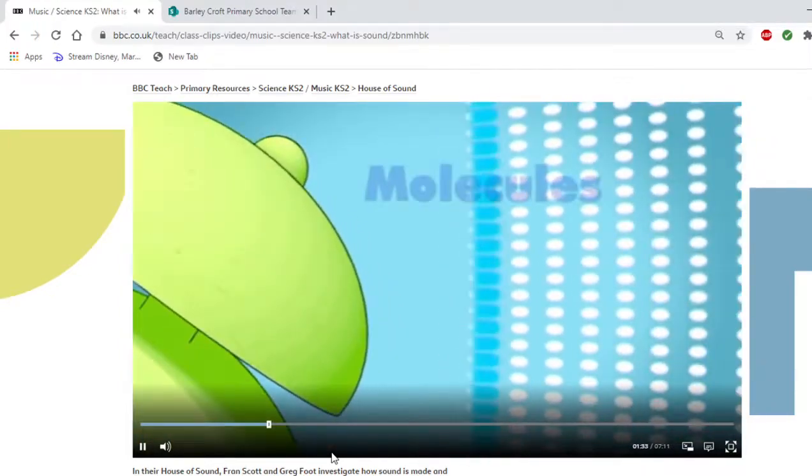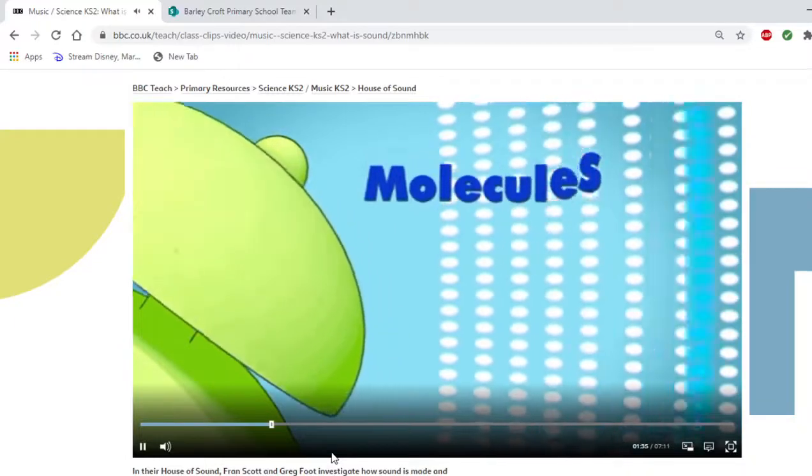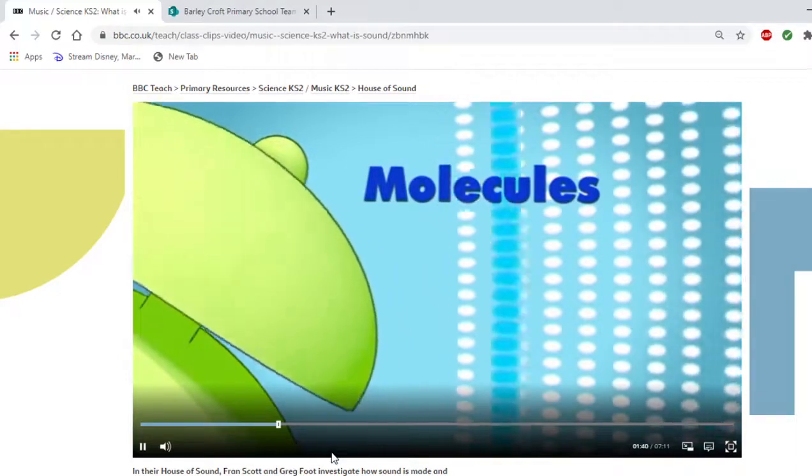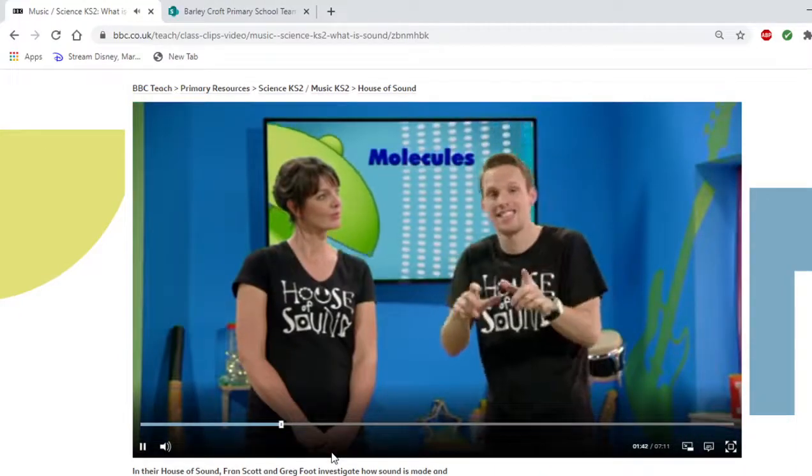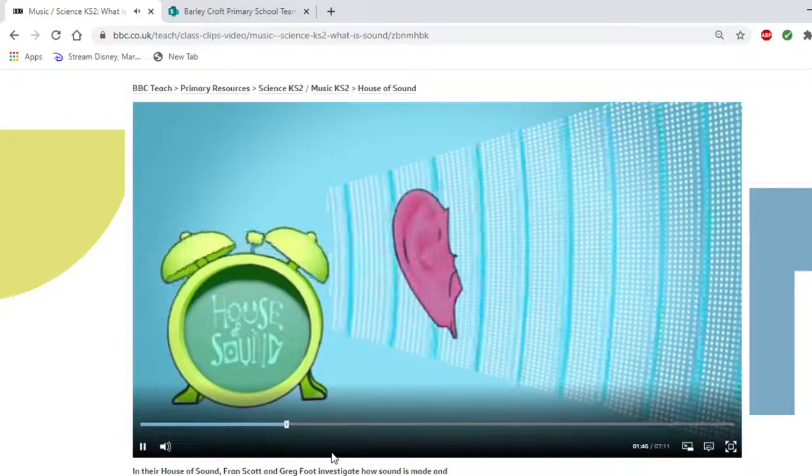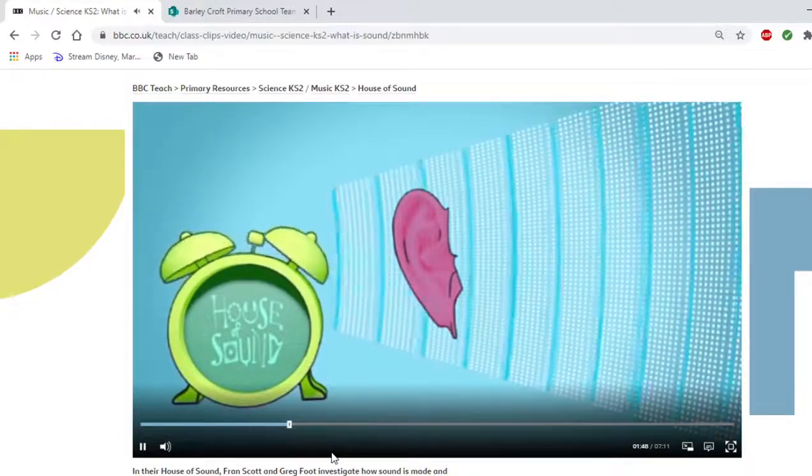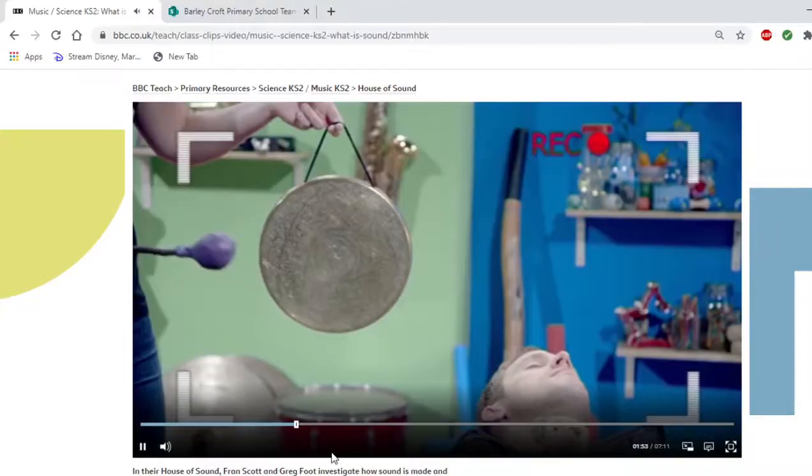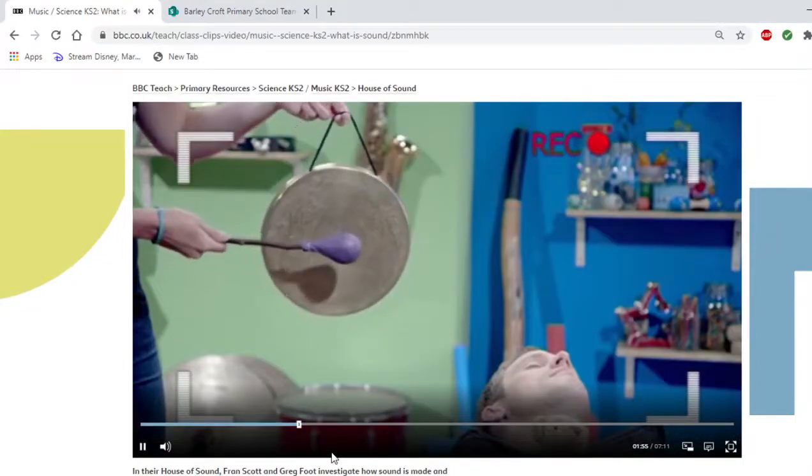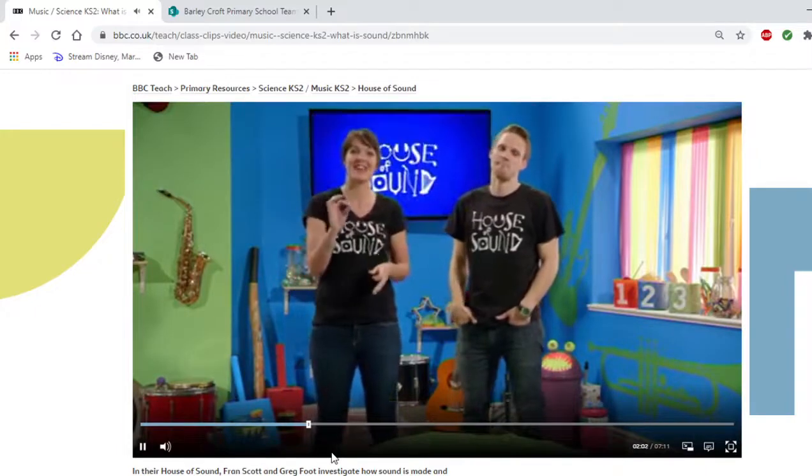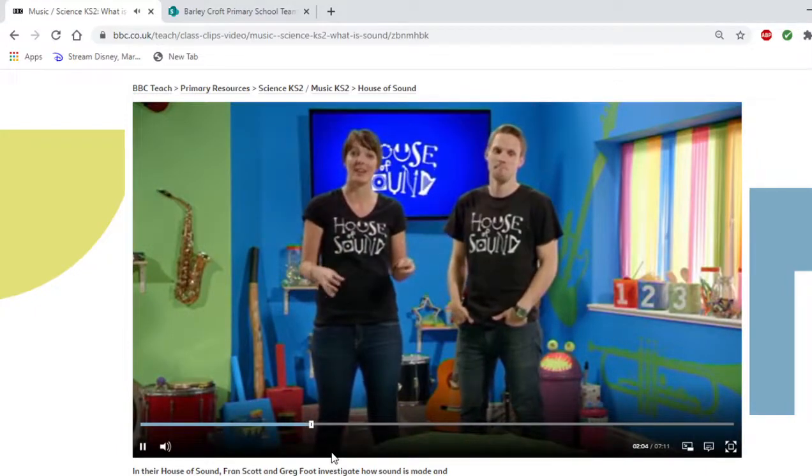You can't see this happening because it's tiny things called molecules that are doing the vibrating. The molecules bump into each other, passing the vibrations through the air. This is called a sound wave. If your ears are close to the vibrations, then you hear them clearly. The further a sound wave travels, the weaker it gets. So because I was very close to Fran's gong, the vibrations were really strong and so the sound it made was loud.